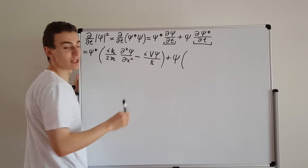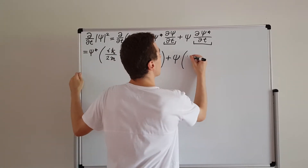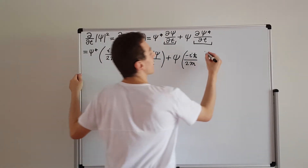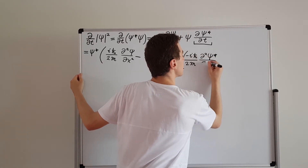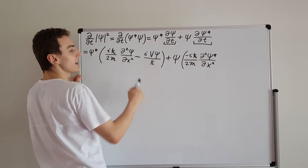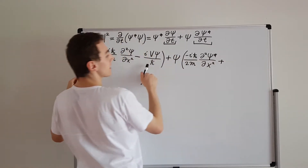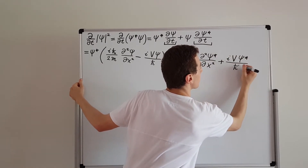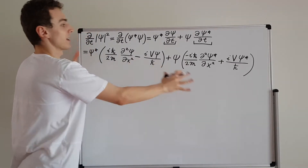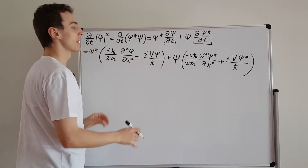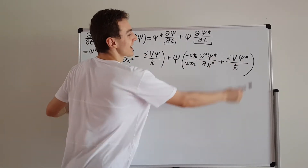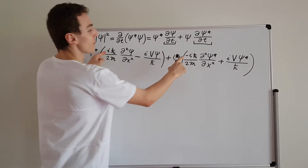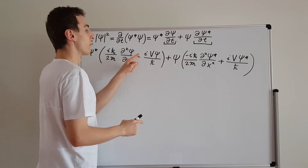Now we add to that psi times the complex conjugate of the previous expression. We put a minus sign here, turn the minus into a plus, and replace psi with psi star, giving us minus i·h-bar over 2m times d²psi*/dx², plus iV·psi* over h-bar. Note that this term is the complex conjugate of the other — everywhere there's an i, we have a minus i, and vice versa.